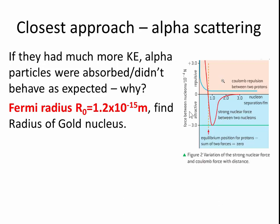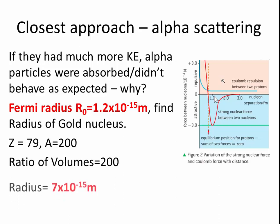Now we have to introduce the Fermi radius which is 1.2 times 10 to the minus 15. This is the point where the force is basically greatest and it's roughly equal to the size of a proton or neutron. Now you need to find what is the radius of a gold nucleus. If you know that there are 200 nucleons in the nucleus, the atomic number is 79. If you find a ratio between the volumes, it's roughly 200. You get a value of the radius of gold nucleus to be around 7 times 10 to the minus 15 meters.